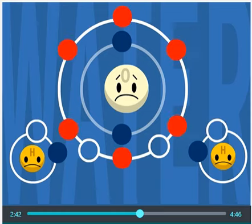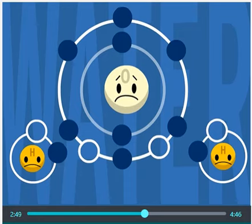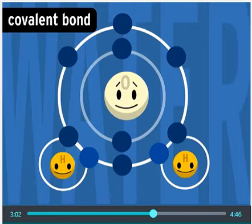Oxygen has six electrons in its outer shell. Since the second shell can hold eight electrons, oxygen is looking for two more. So, oxygen shares a pair of electrons with one hydrogen and another pair of electrons with another hydrogen. Now all three atoms are stable. This sharing of electron pairs is called a covalent bond.